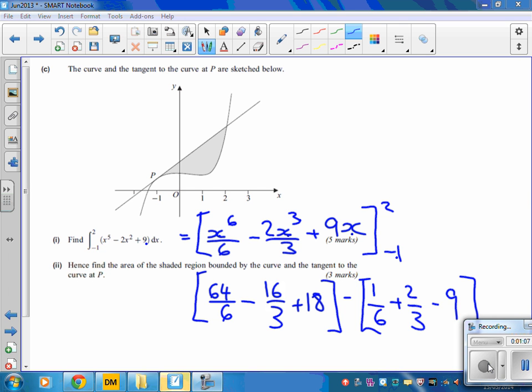Now it's easiest to deal with these things as fractions in pairs. So I've got 64 take away 1. That gives me 63 over 6. Then I've got minus 16 minus another 2. That makes minus 18 over 3. And then I've got 18 minus minus 9, which is 27.